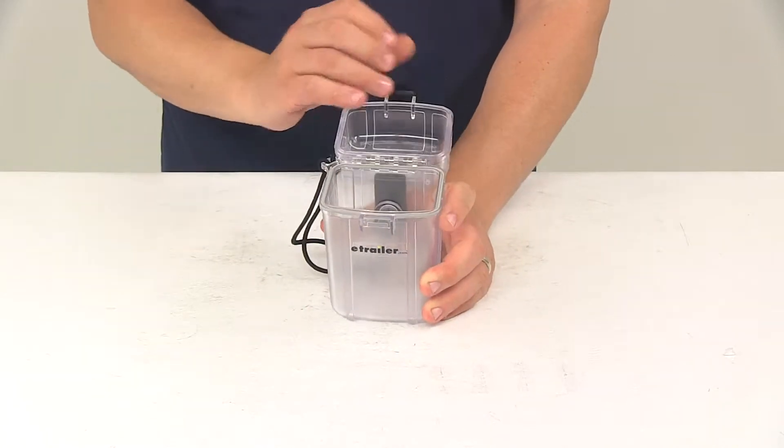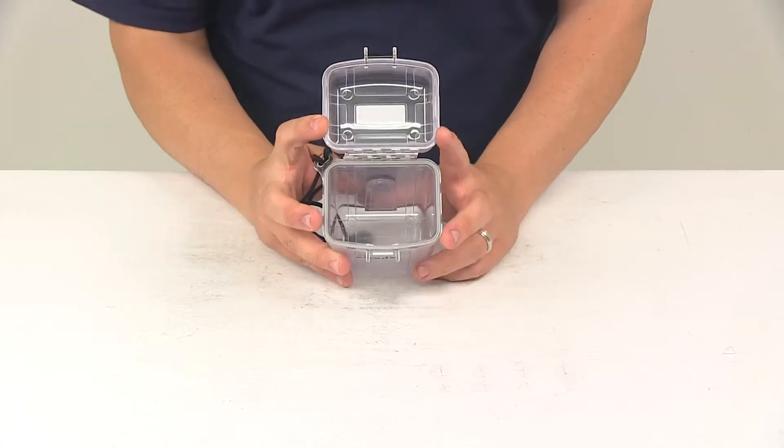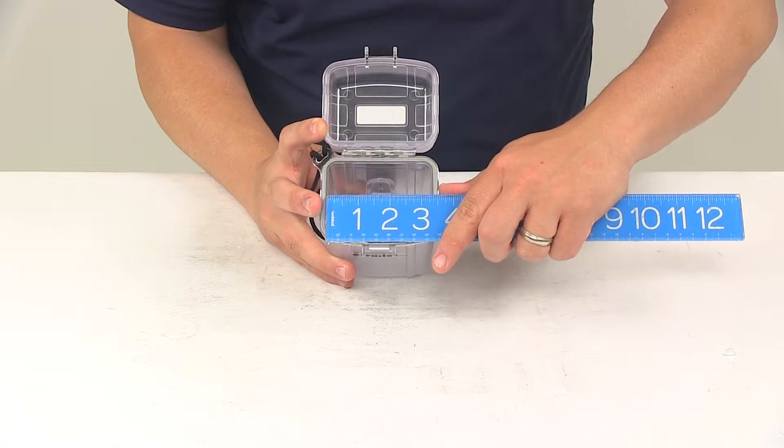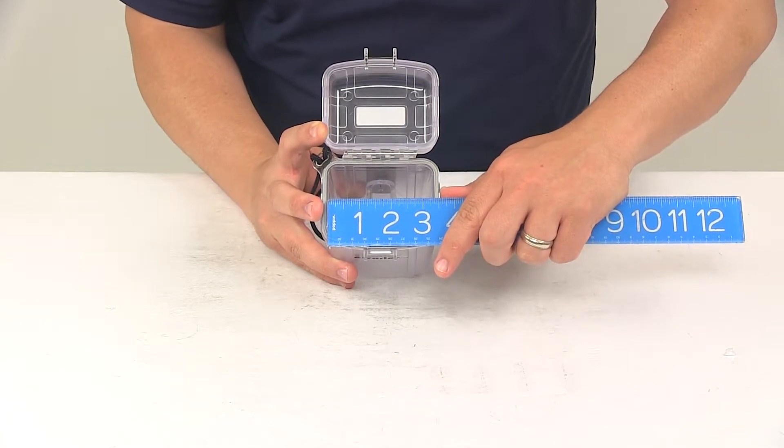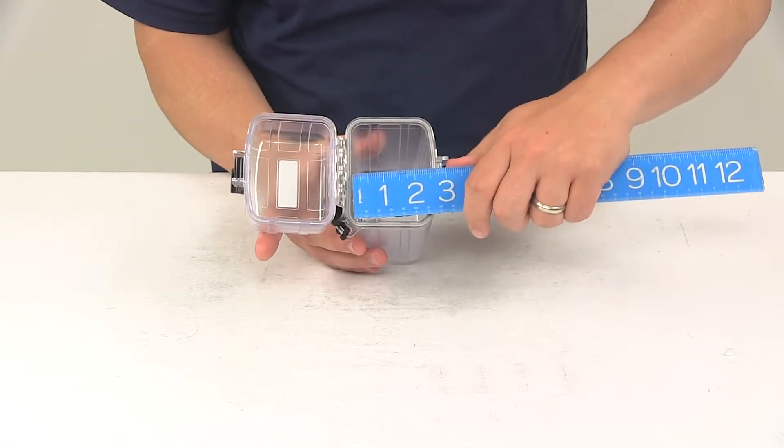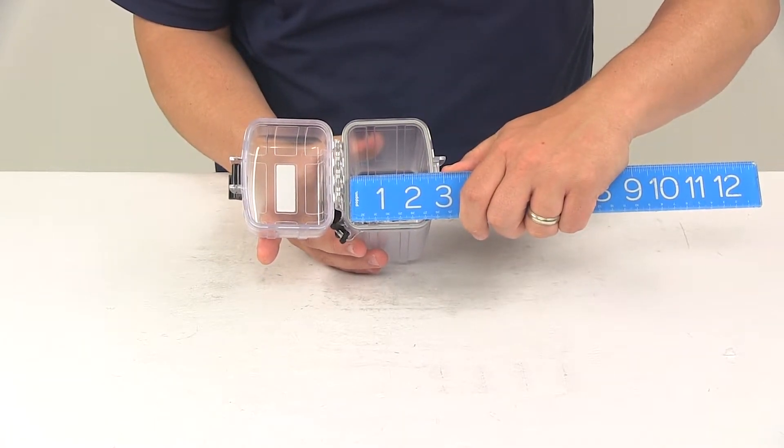The available space inside, we're going to take a measurement of the opening, so edge to edge of just that opening area. It's about three and one-quarter inches going this direction. Going this direction is about two and a half inches.